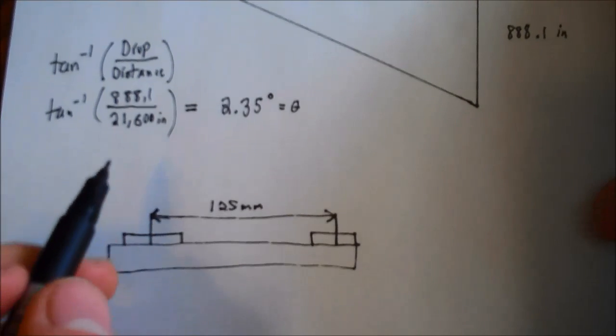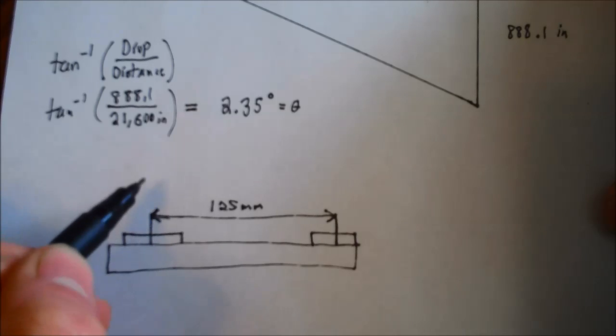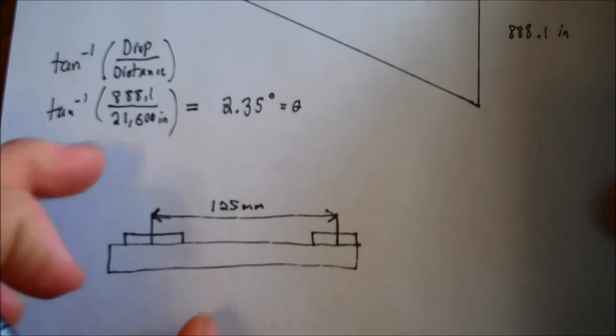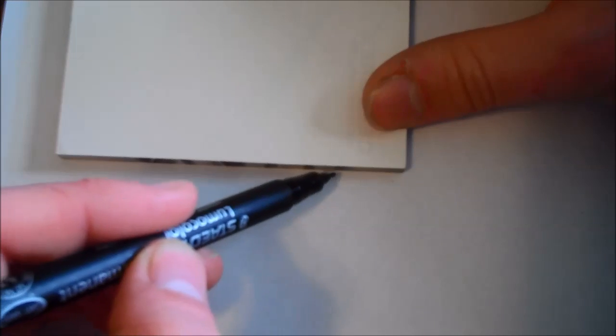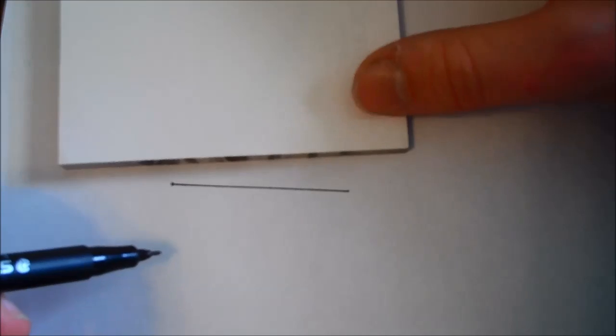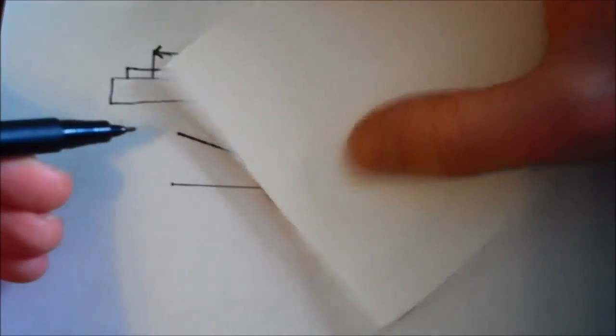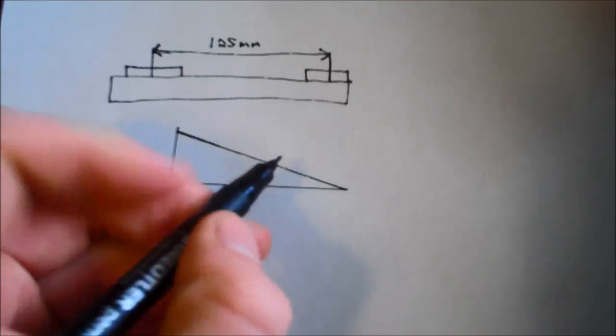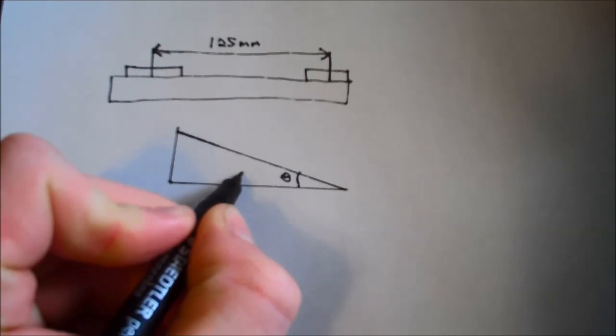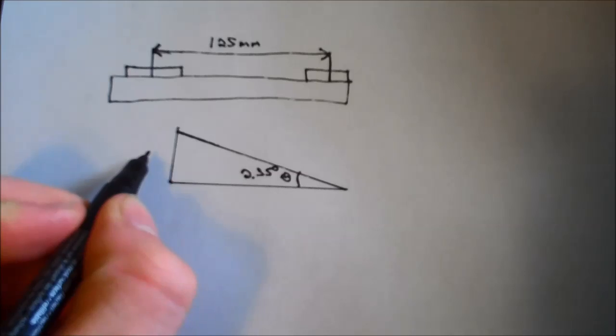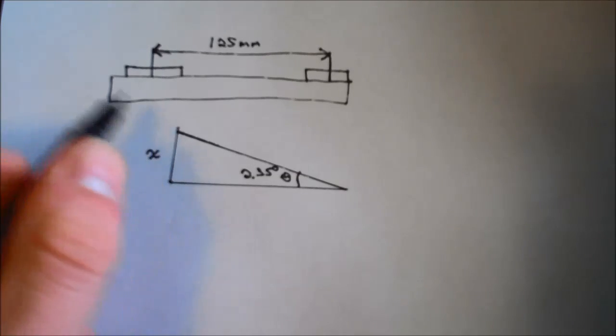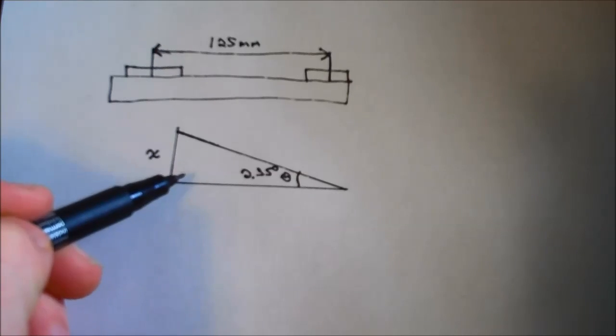So now we're going to find, set up another triangle, and figure out how much height we need in the back of the scope mount to get that scope to be 2.35 degrees angled downwards. So we're going to set up another triangle. Let's draw this out here. The bottom line will be even with the bore or the LOS. And here's our triangle here. And then this is going to be theta, or our 2.35 degrees. And we need to find x, this distance right here. This is going to be the height that the rear sight needs to be higher than the front.